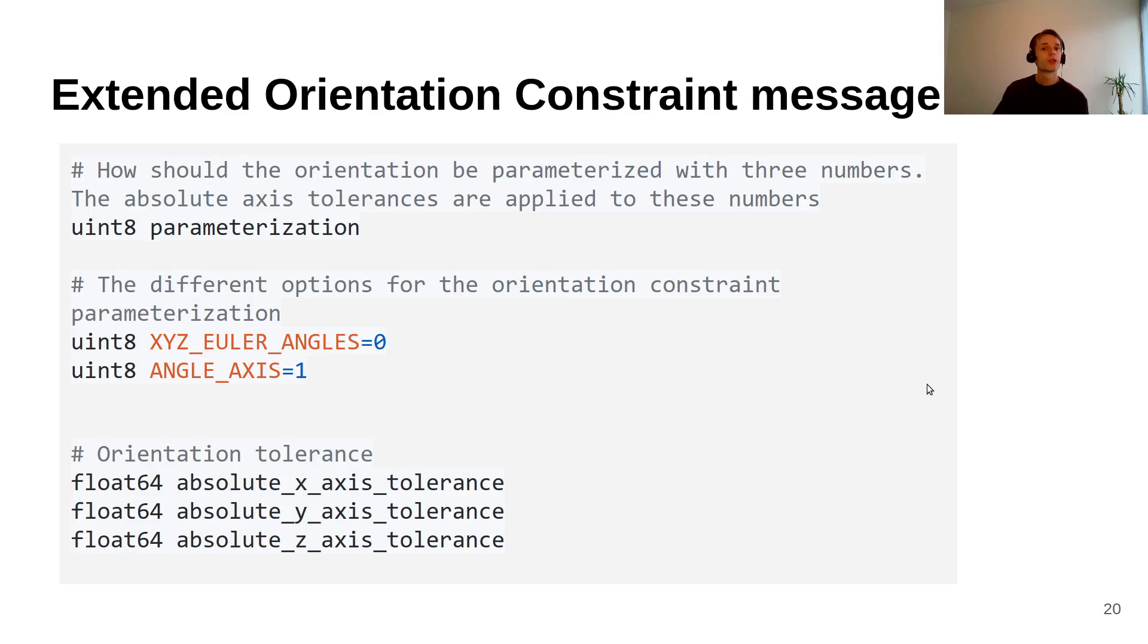But the disadvantage of adding this new representation is that we have to change the constraints message in MoveIt, the orientation constraint message. In the past there were only three numbers that represented three tolerances around the three rotation axes. And now we added a new parameterization flag, so we can choose between different parameterizations. For now there will be two, but we could add extra parameterizations in the future.